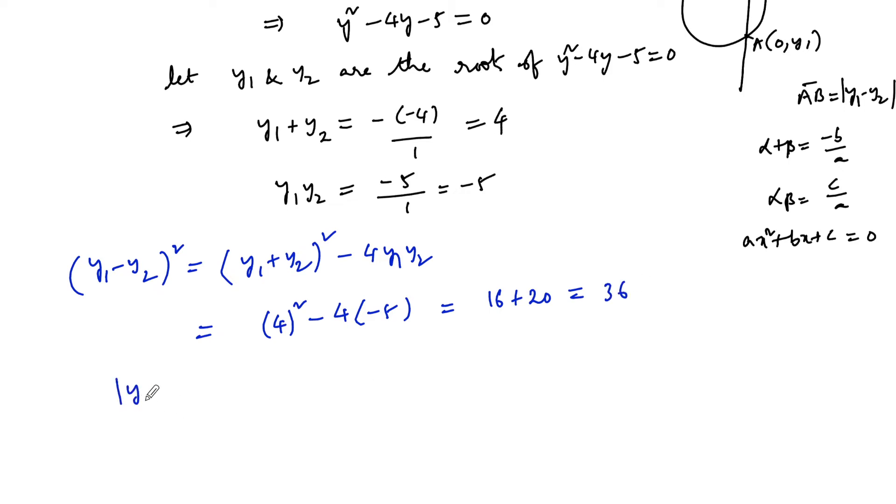By taking square root on both sides, |y₁ - y₂| = √36 = 6. So we can say that the length of intercept is 6 units.